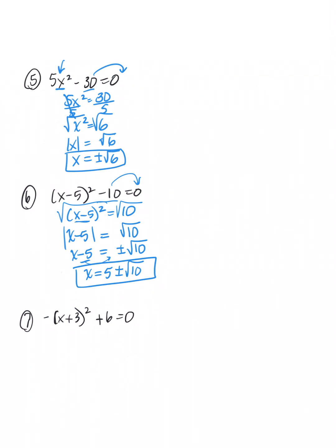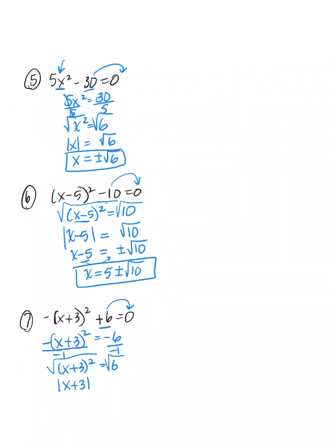Number seven: move the constant term over — it becomes negative 6. Get rid of the negative 1 coefficient, so (x plus 3) squared equals positive 6. Take the square root — x plus 3 comes out within absolute value bars. Get rid of absolute value using plus or minus, giving x plus 3 equals plus or minus √6. Move the 3 over — it becomes negative 3, giving x equals negative 3 plus or minus √6.